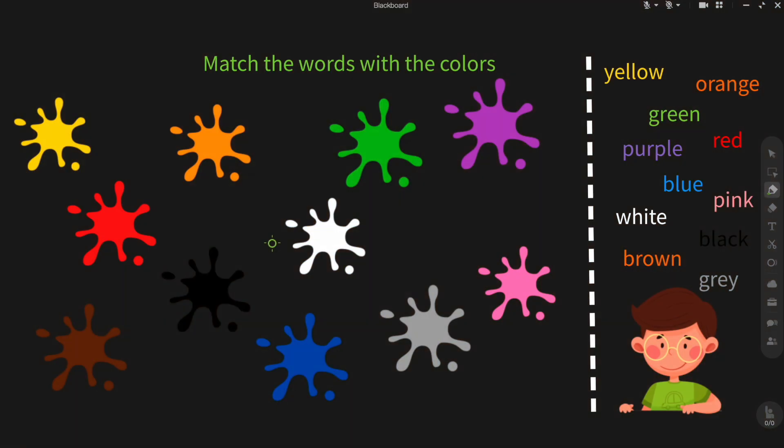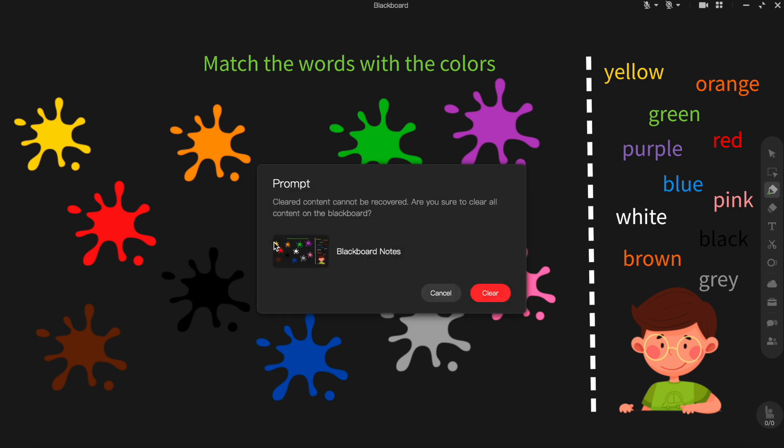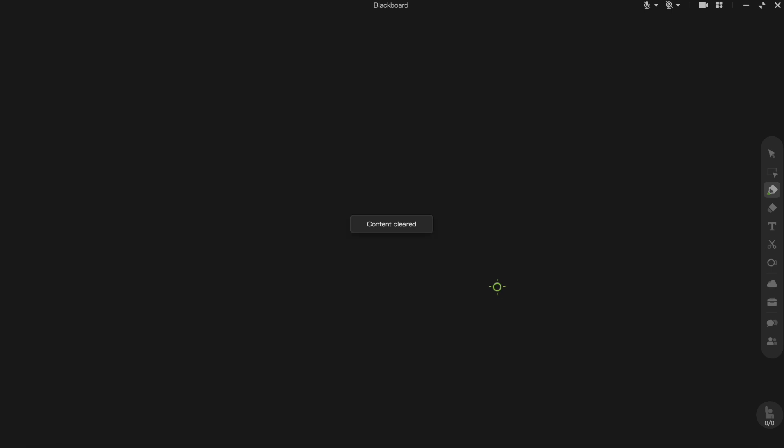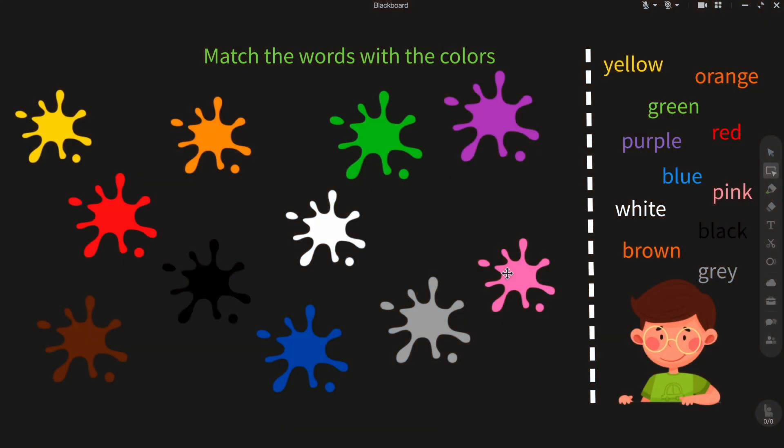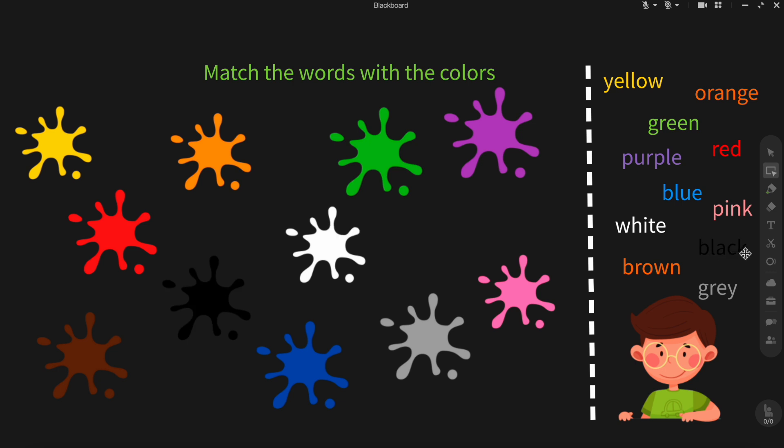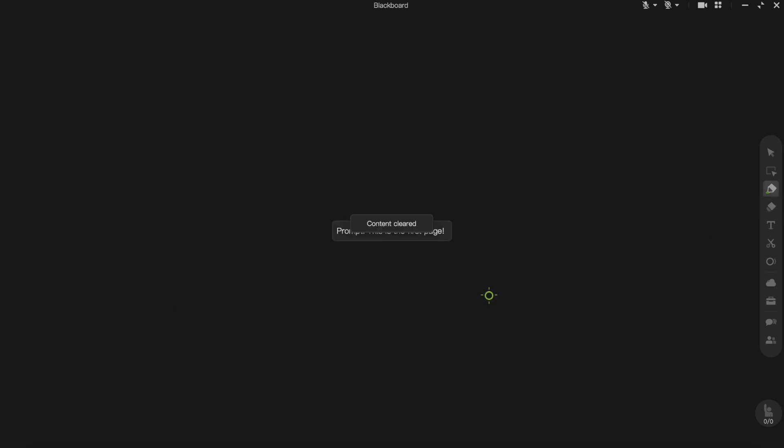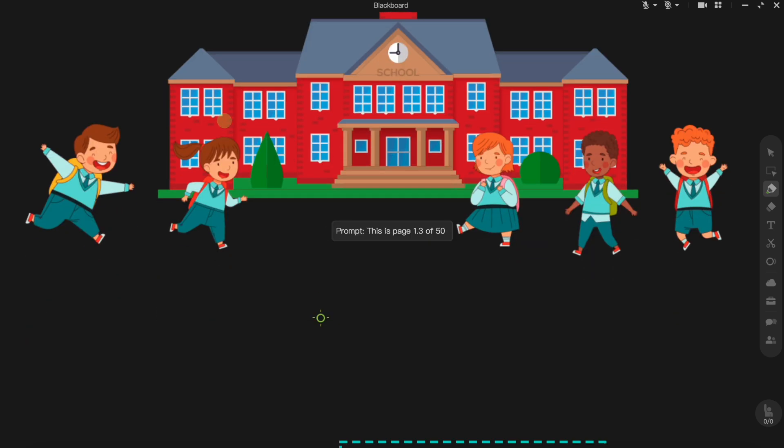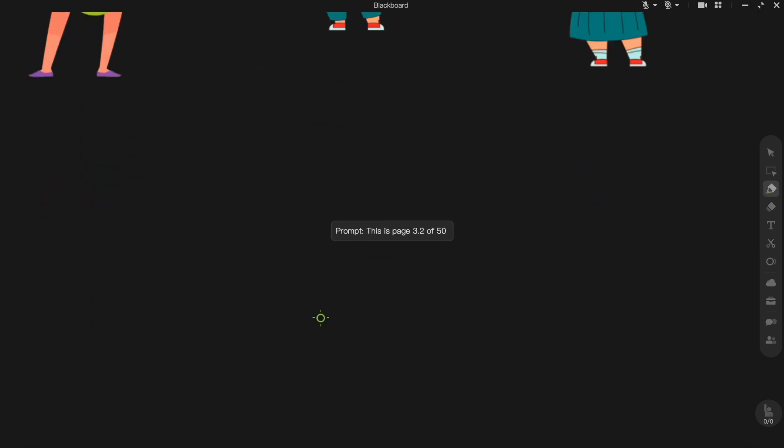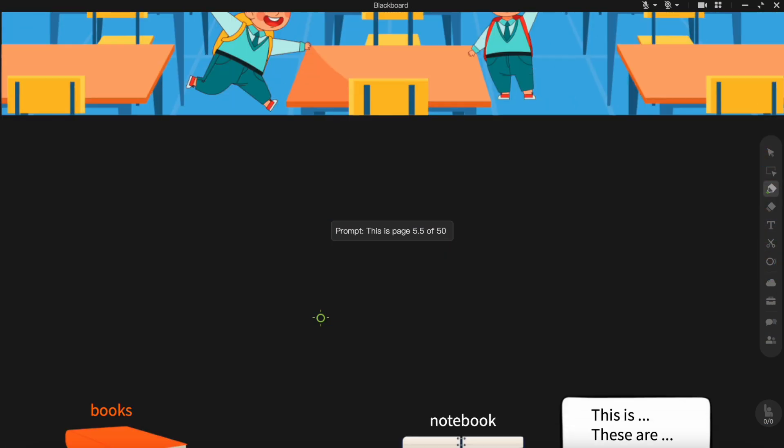First, you can use the keyboard shortcut Command N on a Mac or Control N on Windows. When you use this shortcut, a prompt will appear to confirm the action, reminding you that once cleared, the blackboard content cannot be recovered. This is a quick and effective way to start fresh during your lesson. Alternatively, you can achieve the same result using the eraser tool. Simply click on the eraser icon in the toolbar and then choose the clear all option. This will instantly erase all the content from the blackboard, leaving you with a blank slate to continue teaching. These options give you flexibility depending on your workflow, whether you prefer keyboard shortcuts or working directly with the toolbar. It's always a good idea to double check before clearing to ensure no important content is lost.